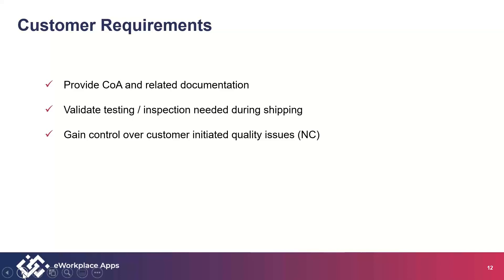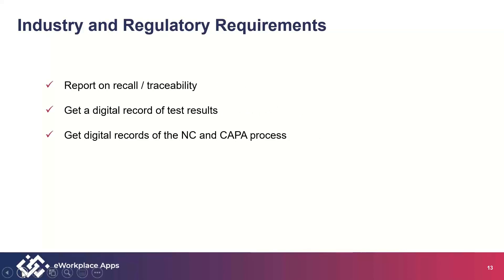On the customer side, it can be as basic as providing certificates of analysis and related documentation. In other situations, specific tests and inspections need to be performed before shipping — for example, when dealing with Costco, validating how the truck was loaded, how pallets were stacked, or checking expiration dates. Those tests might differ from shipping to Walgreens. Some customers also want a formal process for non-conformance issues. Industry and regulatory requirements include recall and traceability reports, digital records of who did what and when, and a formal process to digitize NC and CAPA.